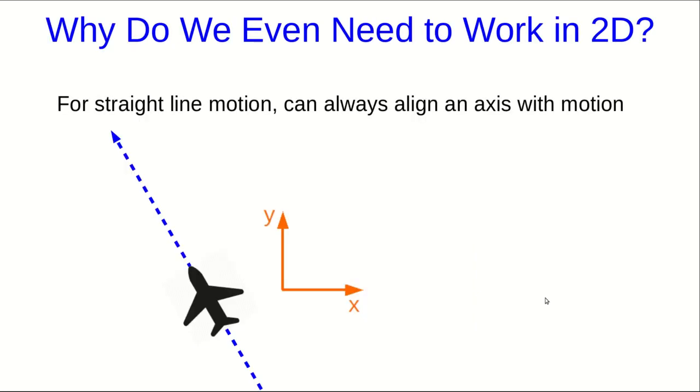As long as we're talking about motion in a straight line, it might occur to you to wonder why we even need to be able to work in two dimensions. After all, for motion in a straight line, you can always choose your axes so that the motion lies along the line. So for this airplane, you could choose axes so that, for example, the y-axis points along the motion.